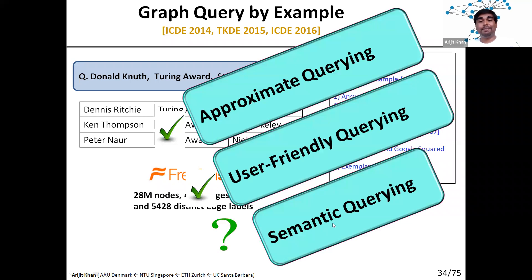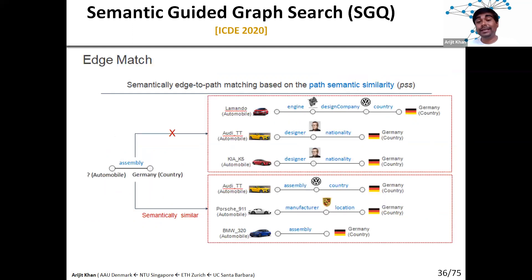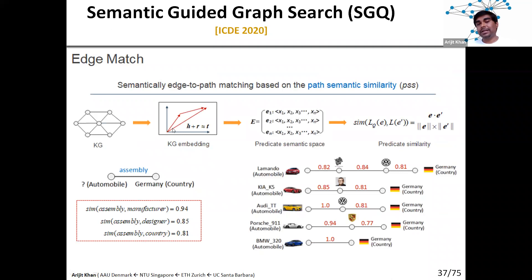Now let's move on to our recent work on semantic search. Let's revisit the toy example from the DBpedia knowledge graph with many cars, their companies, and countries. We want to find answers that are relevant but do not match exactly in structure. For example, Audi is a right answer but the path connecting it to Germany is structurally different from the query edge. How do we find such semantically similar paths given a query edge? We propose a knowledge graph embedding-based technique.